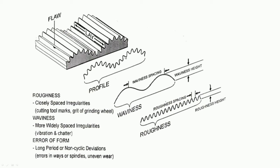When we remove the micro irregularities or roughness, we get the waviness. The waviness height is the distance between peak and valley, and the distance between two peaks or two valleys is termed as waviness spacing. If we remove the waviness part of the profile, we get only the micro irregularities, which is termed as roughness. The distance between peak and valley is termed as roughness height, and the pitch — the distance between two peaks — is termed as roughness spacing.